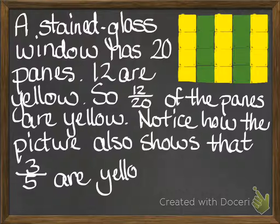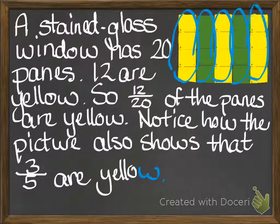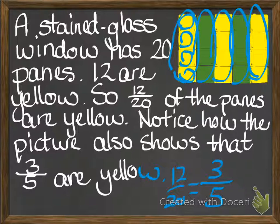Notice how the picture also shows that 3 fifths are yellow. You can see these rows right here — there are 5 of those rows, and out of those 5 rows, 3 of them are yellow. So we have equivalent fractions here. We have 12 twentieths, or you can look at the whole row and see that 3 fifths of them are yellow. This is like what we talked about yesterday with equivalent fractions.